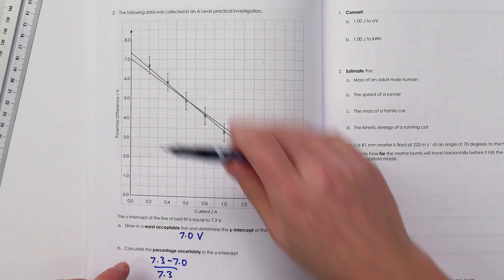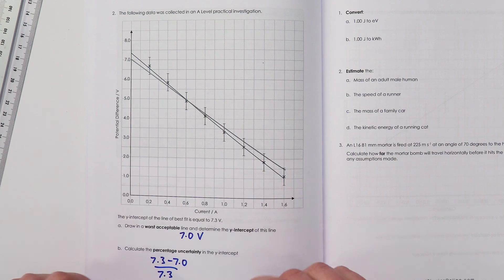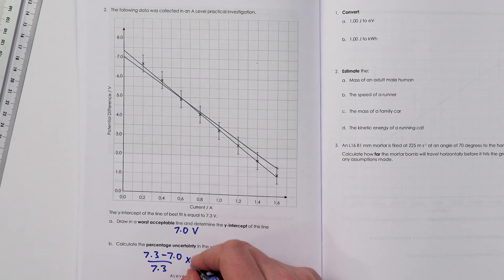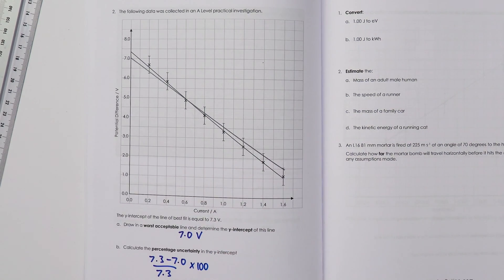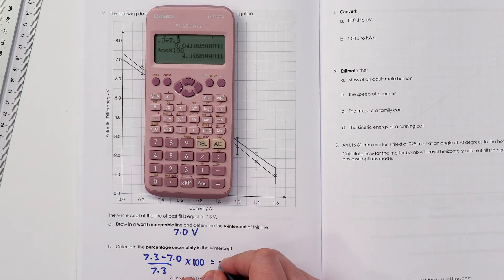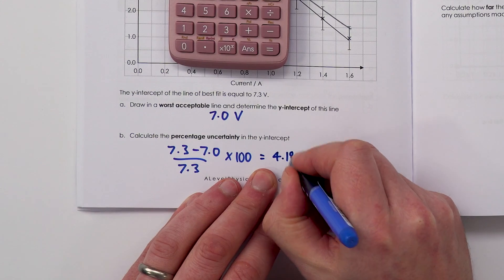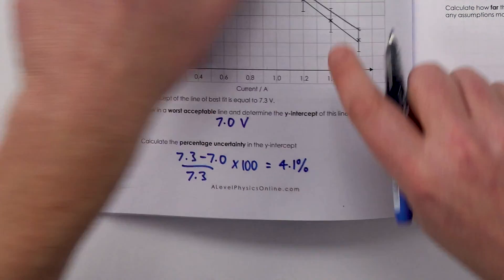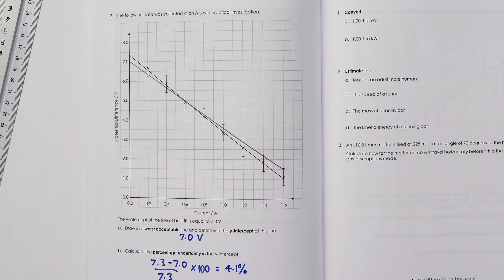It doesn't matter if we had a steeper or a shallower line, it's the modulus of this which we're interested in. We're going to multiply that by 100. So I'm just going to work that out. That gives us a percentage uncertainty of about 4.1% in that data using that worst acceptable line.